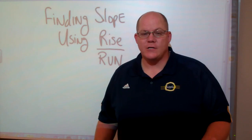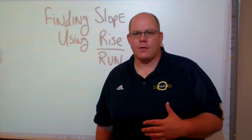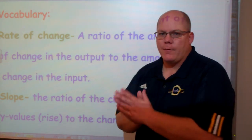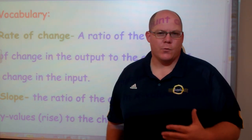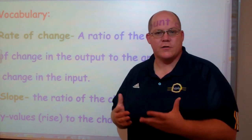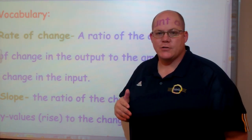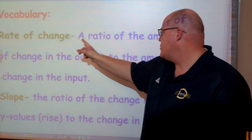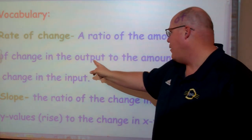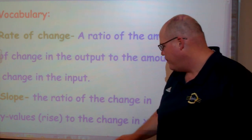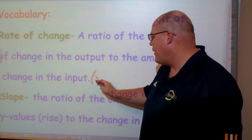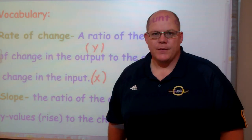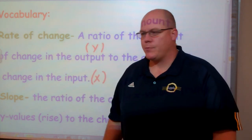The slope is a ratio in which we're comparing the y value and the x value. A couple quick vocabulary words — first, rate of change. When we're finding the slope, we're looking for what is the rate of change: how much is y changing in comparison to x? Rate of change is the ratio of the amount of change in the output to the amount of change in the input. Our x value is our input and our y value is our output. So slope is a rate of change problem.